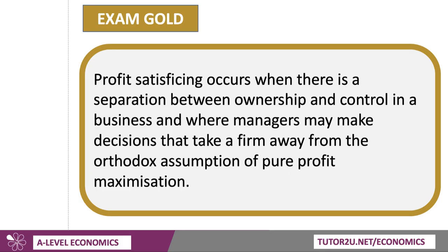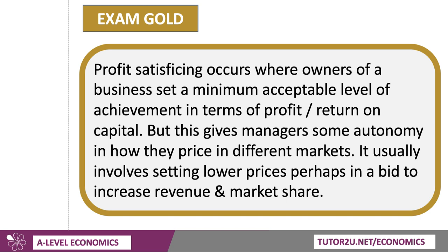Satisficing occurs when there's a divorce or a separation between ownership and control in the business. So typically shareholders might want the business to maximise profit, whereas managers making the day-to-day decisions on pricing and advertising, marketing and investment, they make decisions that may take a firm away from the orthodox assumption of pure profit maximisation. Profit satisficing occurs when the owners of a business set a minimum acceptable level of achievement — it could be in terms of profits in pounds or dollars, or a percentage return on the capital they've employed in the business. But having set that minimum acceptable level, this then gives the managers some freedom, some autonomy in how they price in different markets.